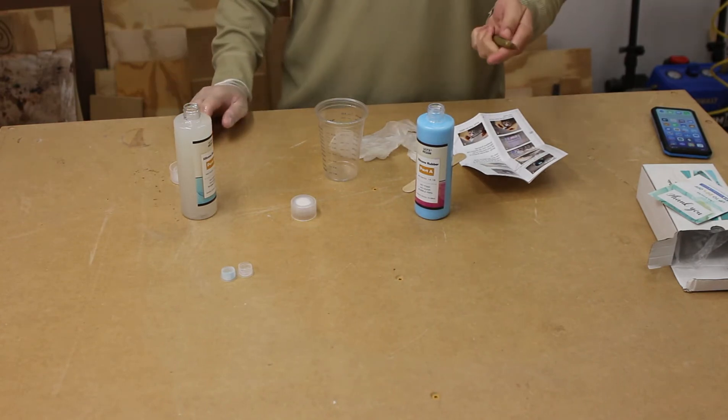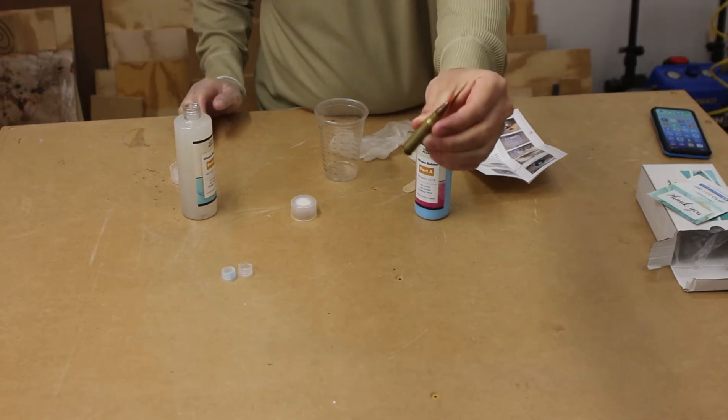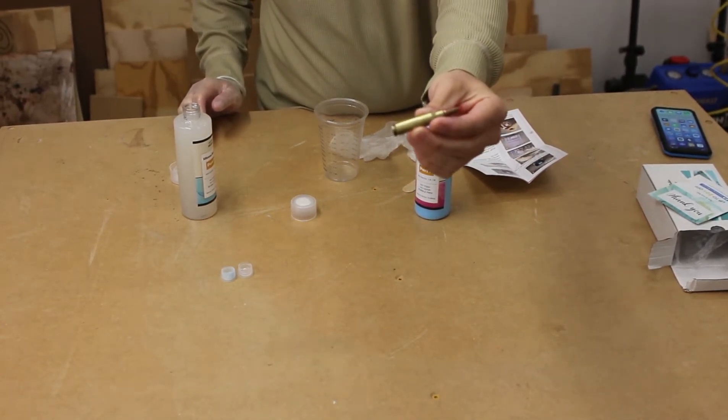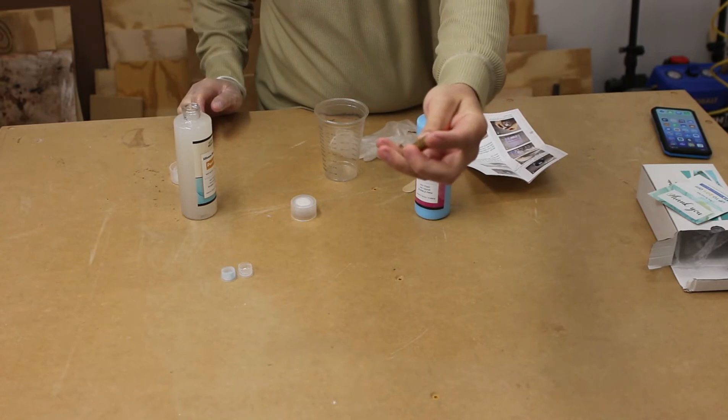For the actual mold that I'll be pouring, it's gonna be a 6.5 Creedmoor bullet. I'm gonna try and make a necklace for my son out of it.